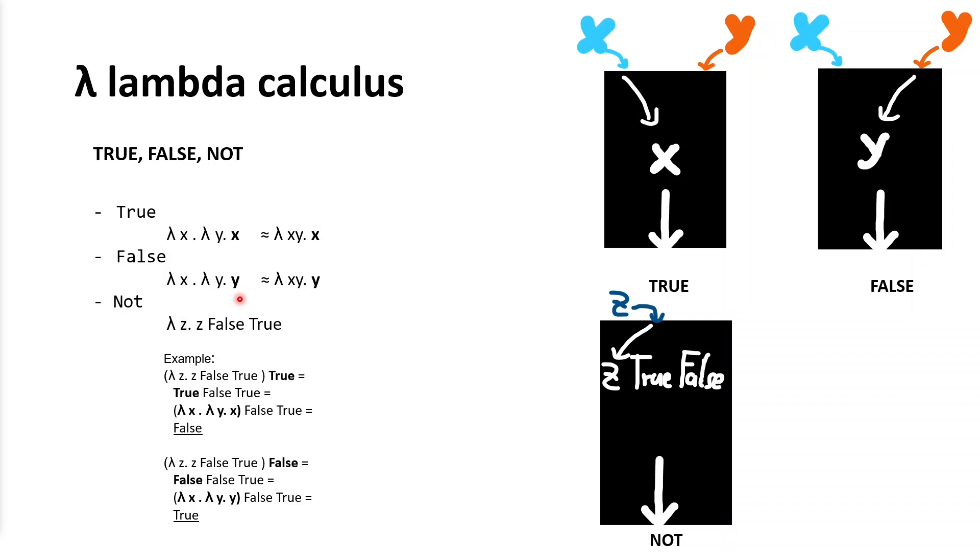And then we have NOT expression which changes true to false and false to true. NOT is a little bit tricky, so let's explain on the example.